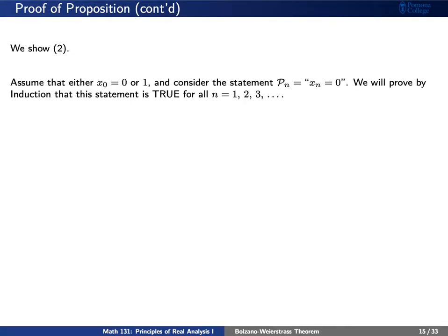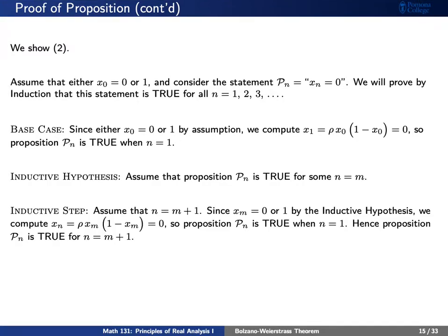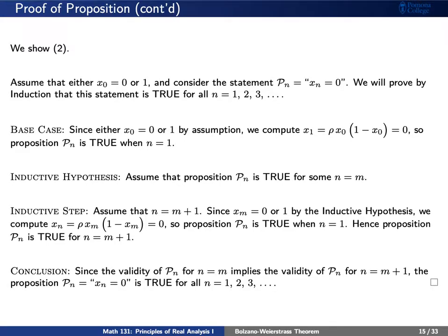Let's show the second statement by induction. That is, if x sub 0 is either 0 or 1, then every x sub n will be 0. The base case is true because x sub 1 will be 0 whenever x sub 0 is either 0 or 1. So let's assume that the proposition is true for some integer n equals m. This is easy to check because if x sub m is 0, then we plug this into the formula rho times x sub m times 1 minus x sub m to see that x sub m plus 1 is also 0. So we conclude that the statement is true for all positive integers n.